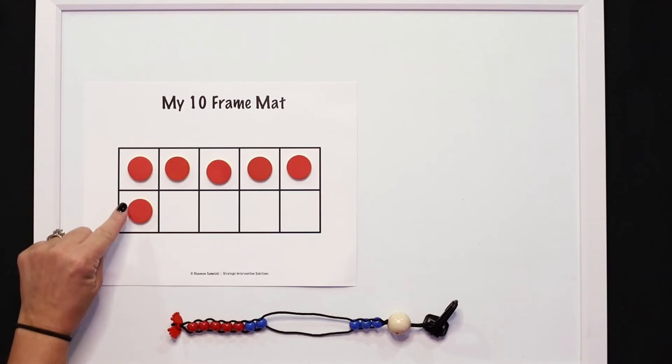He had six on the 10-frame and seven on the counting buddy. But remember, the question he was supposed to do was to build one less on the counting buddy. Do you see a mystery math mistake? Let's hear from our friend Mira and see what she has to say.